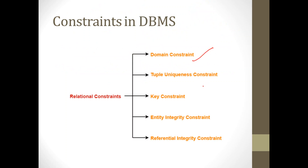There are the following five constraints in DBMS: domain constraint, tuple uniqueness constraint, key constraint, entity integrity constraint, and referential integrity constraint. These are the relational constraints and we will discuss each one in detail.